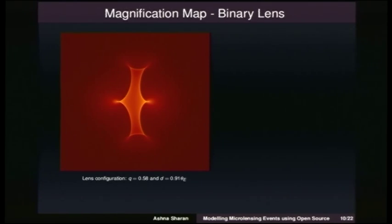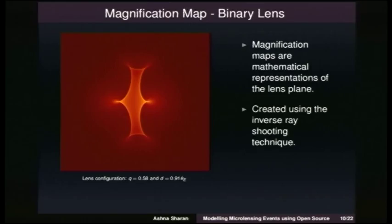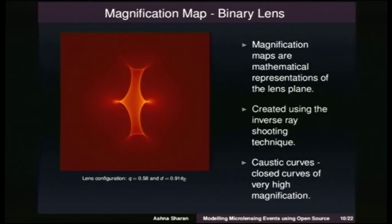This is a magnification map. For a single-lens event we had a nice circular pattern with the lens in the center. For a binary lens, inverse-ray shooting works whereby billions of rays are shot from the observer plane through the lens plane and onto the source plane — backwards. These closed curves represent very high magnification on the lens plane. The concave curves are called folds, and the points where they meet are called cusps.